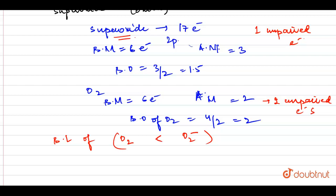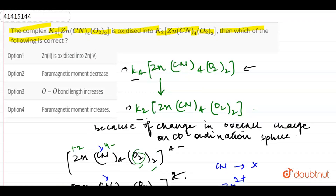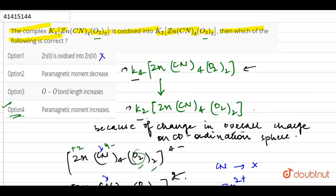Since we have gathered all the information about both species, we compare with the options. Option 1 says Zn²⁺ is oxidized into Zn⁴⁺ — this is incorrect because Zn is in a stable oxidation state and won't change. Option 2 says paramagnetic moment decreases — this is incorrect because going from O₂⁻ (1 unpaired electron) to O₂ (2 unpaired electrons) means paramagnetic moment increases, as given in option 4. Option 3 says O–O bond length increases, but since bond order increased, bond length decreased — so this is also incorrect. Therefore, option 4 is the correct answer.